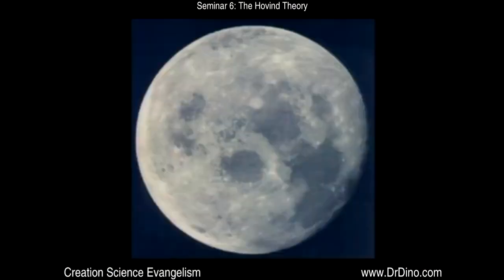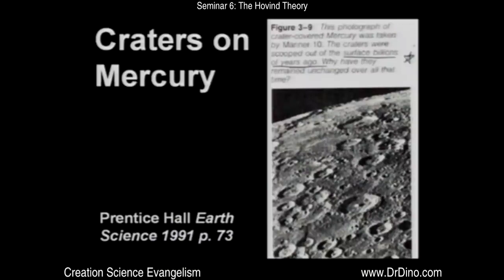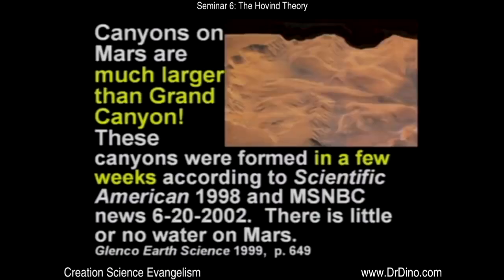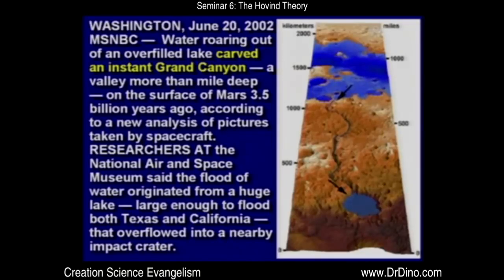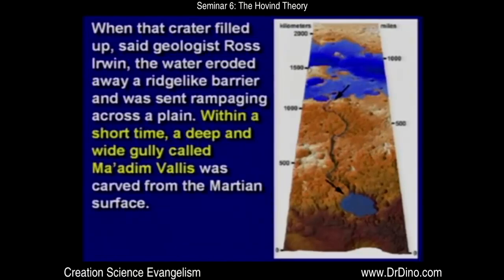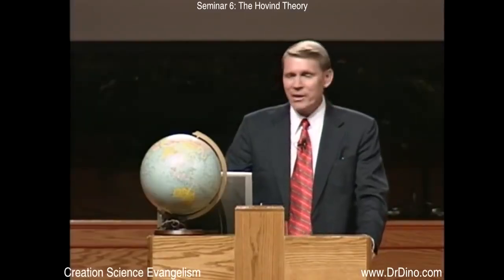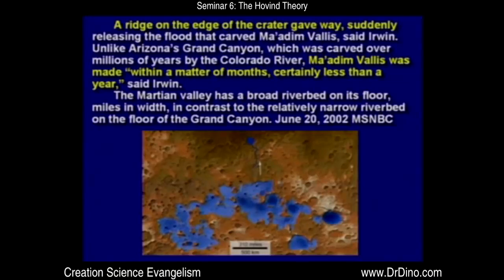Next, the moon has craters on it, but we never see the moon get struck by anything today. Even Mercury has craters on it. Mars has a canyon much larger than Grand Canyon. When scientists studied this canyon on Mars, they said, 'Wow, this canyon formed in a matter of weeks' — they say there was melting water in one of the craters, it overflowed the rim and washed out this canyon very quickly. Well, why can they see a canyon on Mars and say it formed quickly, but you can look at Grand Canyon on planet earth and can't conclude that water formed that canyon very quickly? As a ridge at the edge of the crater gave way, this canyon formed in a matter of months, certainly less than a year, said one of the scientists.